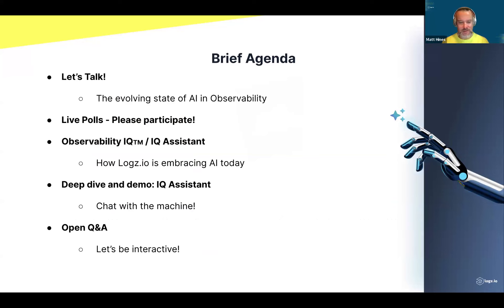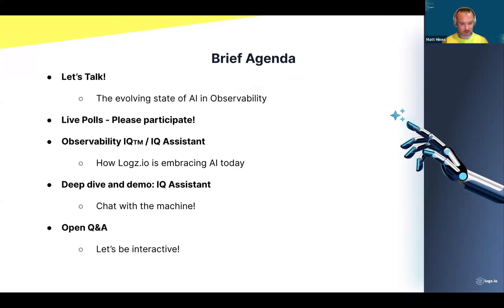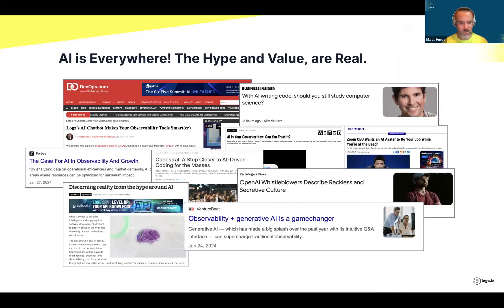Just a quick agenda — we want to make this as conversational as possible today, which is one of the reasons we're doing it live. We'll get through some slides quickly, have a bit of a chat, and then get to the meat of the conversation. We'll be asking you to submit questions to the IQ Assistant, so please jump in and make it as interactive as possible. You can do that in the Zoom interface. We also have some polls and Q&A at the end.